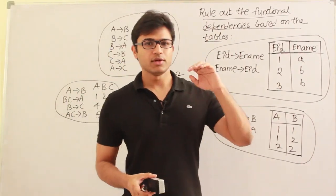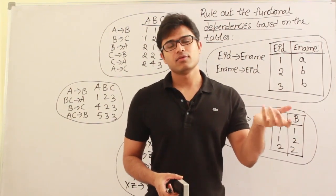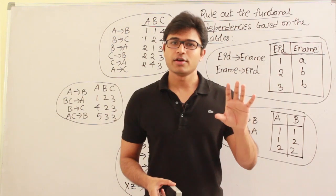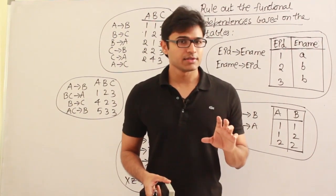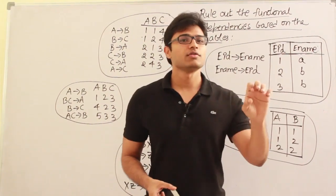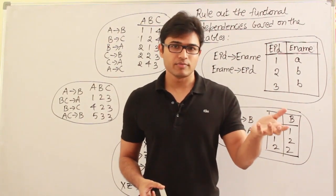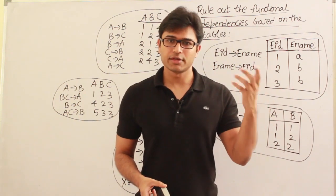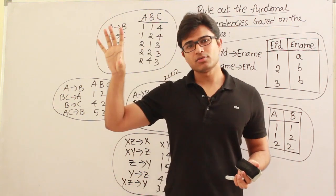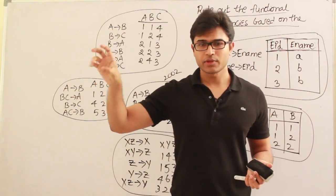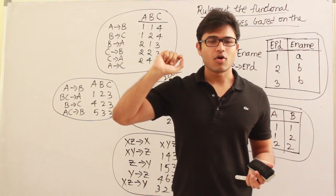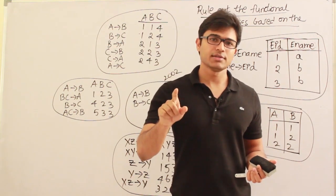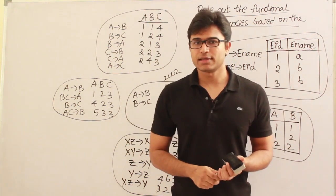The procedure is: first we build the functional dependencies and then we build the tables. But now, if a table is given and it is valid according to all the constraints, what are the functional dependencies we can rule out? After giving a table, we can rule out some functional dependencies that might not have existed, but we will not be able to guess which functional dependencies definitely would have been derived from the requirement analysis.